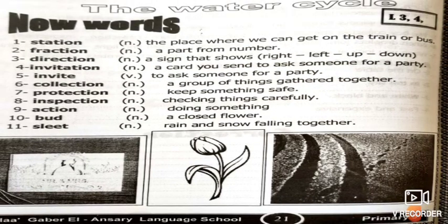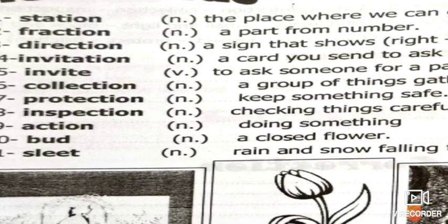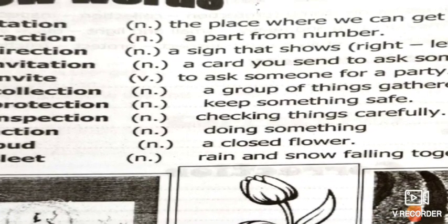Number one: 'station' — the place where we can get on the train or bus. Number two: 'fraction' — a part from a number. Number three: 'direction' — a sign that shows right, left, up, and down.